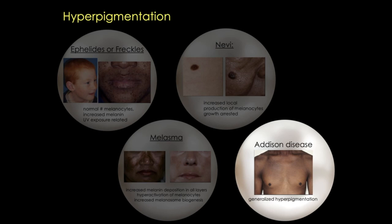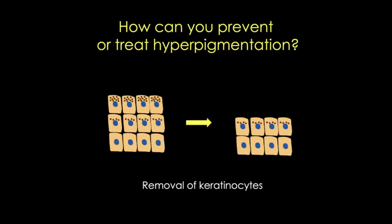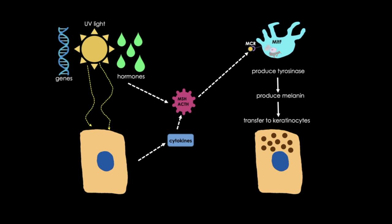So we've seen examples of hyperpigmentation. Some of these we might not want to treat, for example freckles, but some we may want to treat. There are many ways to do this. The simplest way is probably to remove the keratinocytes that have too much melanin—you can do this physically with abrasion, or using chemicals such as creams that contain salicylic acid or retinoic acid.